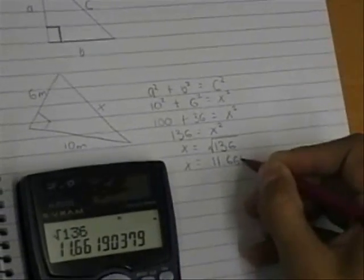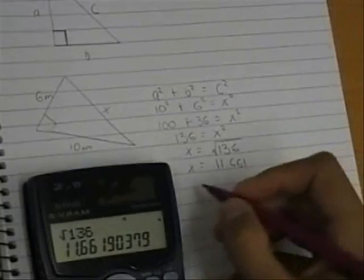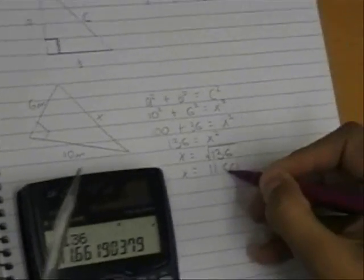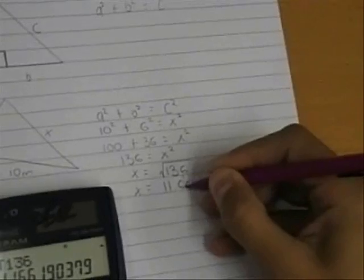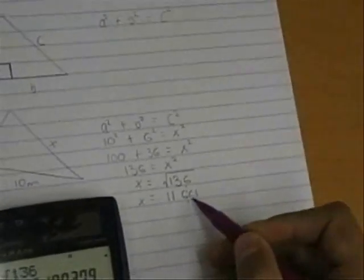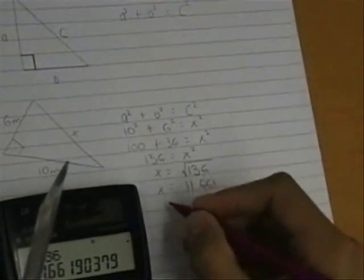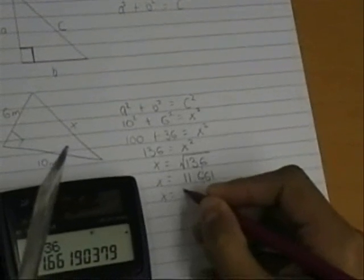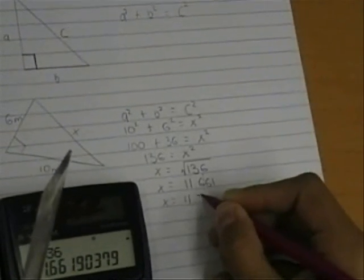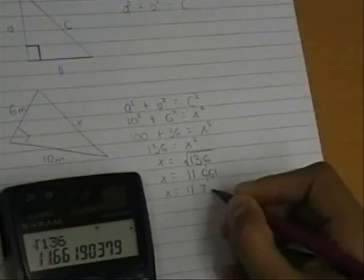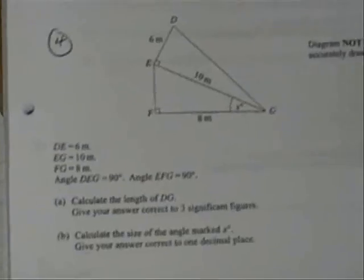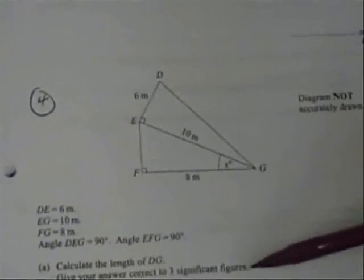We are asked to find this in three significant figures. There's one, two, three. As this is higher than five we shall round it up. Remember to put in your units. We have done the first part of the question. Now we are asked to find the angle x.